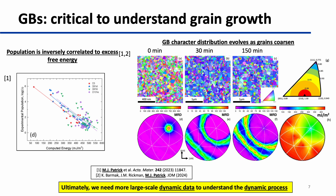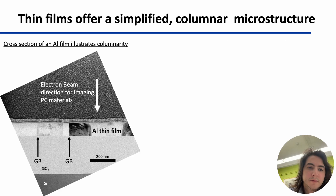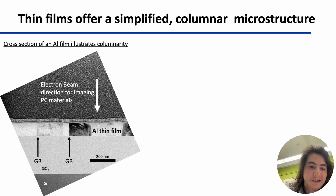We also observe grain boundary character distribution evolution as grains grow in real microstructures. Ultimately, we need more large-scale dynamic data to understand this process, because right now all of the data that we have is relatively coarse in time and relatively coarse in temperature. Thin films offer an excellent platform for studying grain growth in situ dynamically in the TEM.